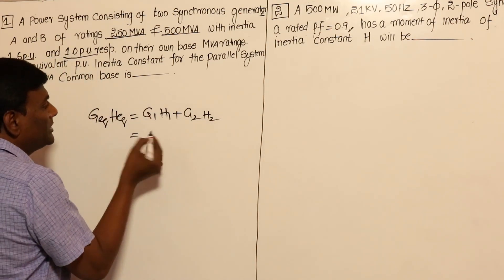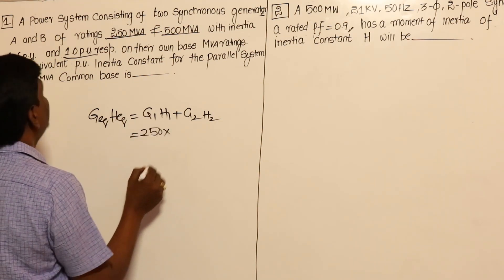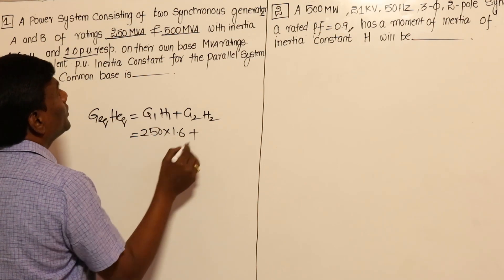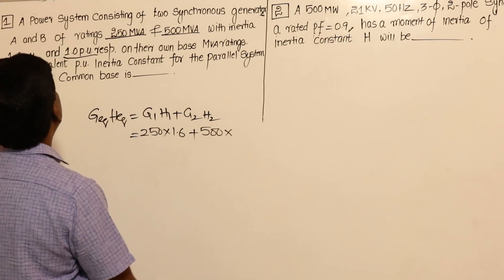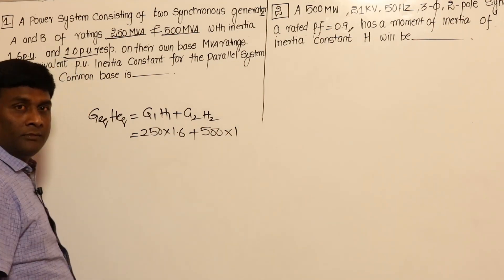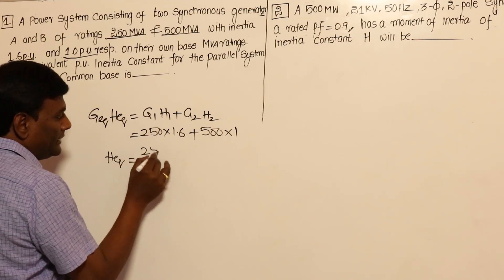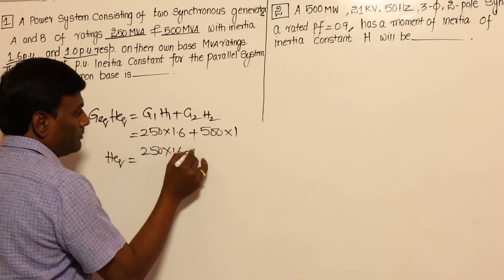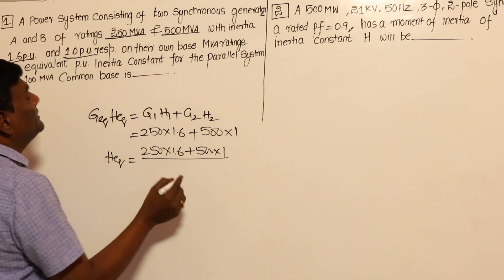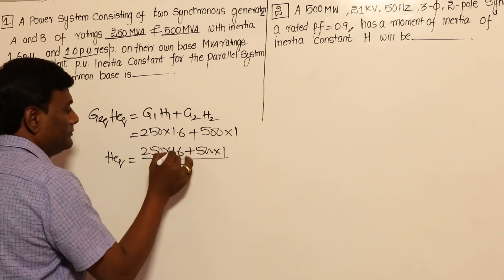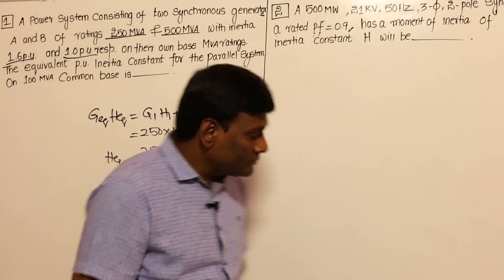So G1×H1 = 250 MVA × 1.6, plus G2×H2 = 500 MVA × 1. Then H_equivalent = (250×1.6 + 500×1) divided by G_equivalent, which is 100 MVA. I got 9 per unit.